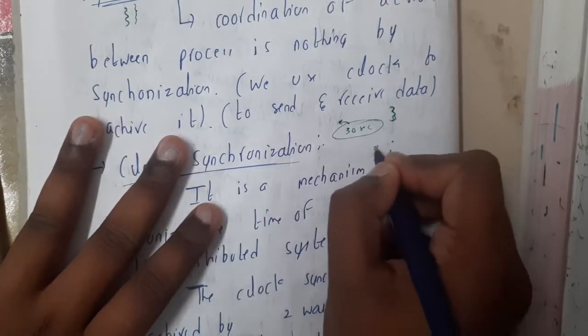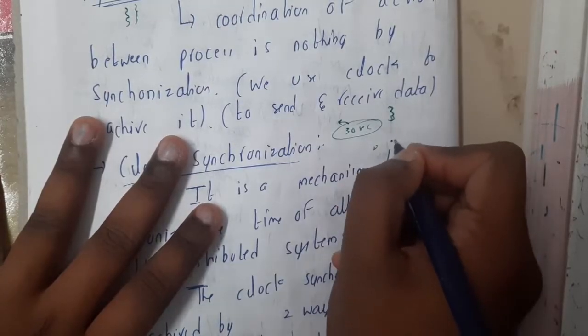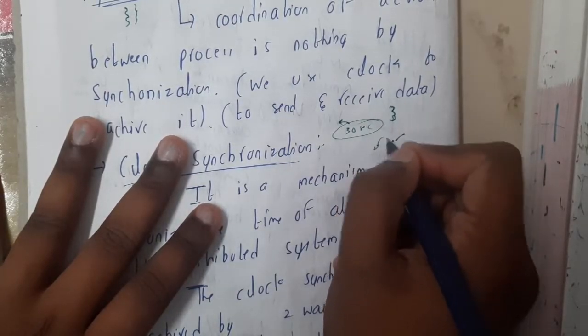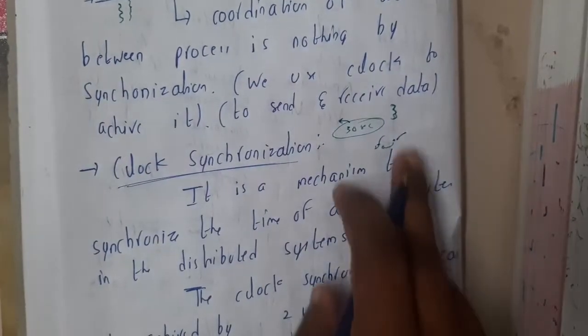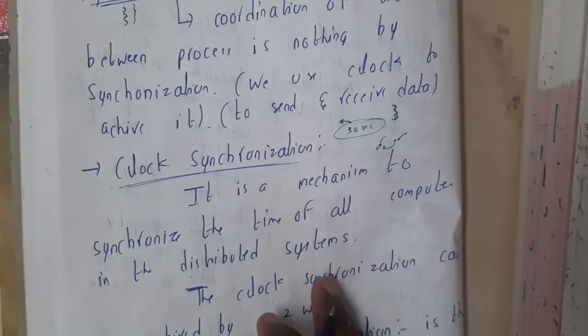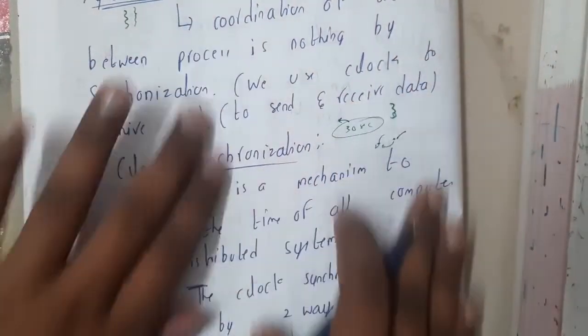If there are three sensors and every 10 seconds each sensor alternately gives data. This will give every 10 seconds, and this will give after 10 seconds. Like every 20 seconds you get two values. These are all synchronizations. One is in sync to another.